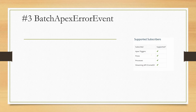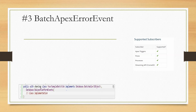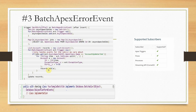You can consume this through Apex triggers, flows, processes, or through Streaming API, meaning you can consume this platform event externally also. To fire Batch Apex Error Event, you need to implement an interface called database.RaisePlatformEvent. If you implement this interface, automatically, if there is an exception within your Apex job, that will be logged to Batch Apex Error Event. You will then also be able to consume this Batch Apex Error Event internally and process it.